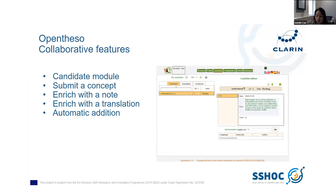The candidate module is another method to add concepts in a collaborative way. Users can discuss the candidate concept together. It can already be enriched by adding a note and even translations to be ready for integration into the thesaurus. The candidate can be rejected, but if it is validated, it is automatically added.